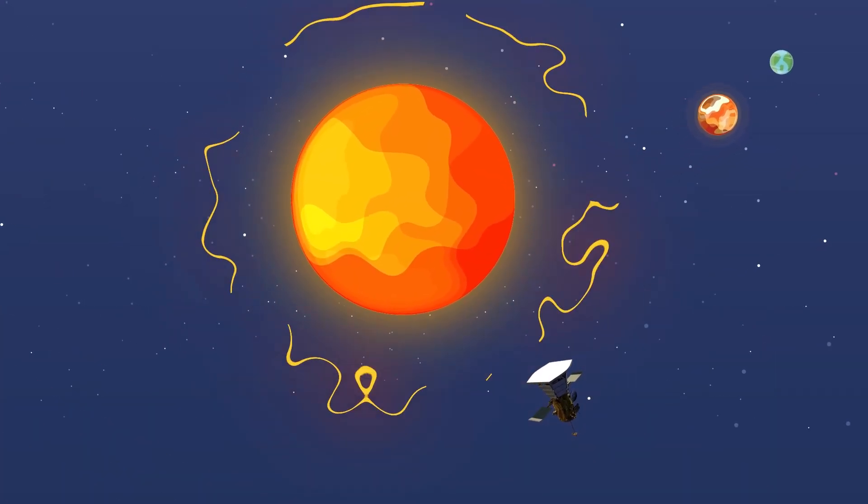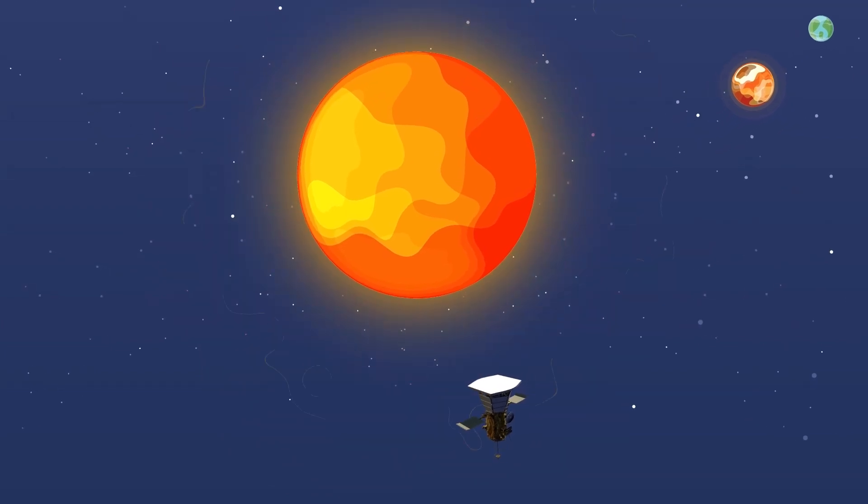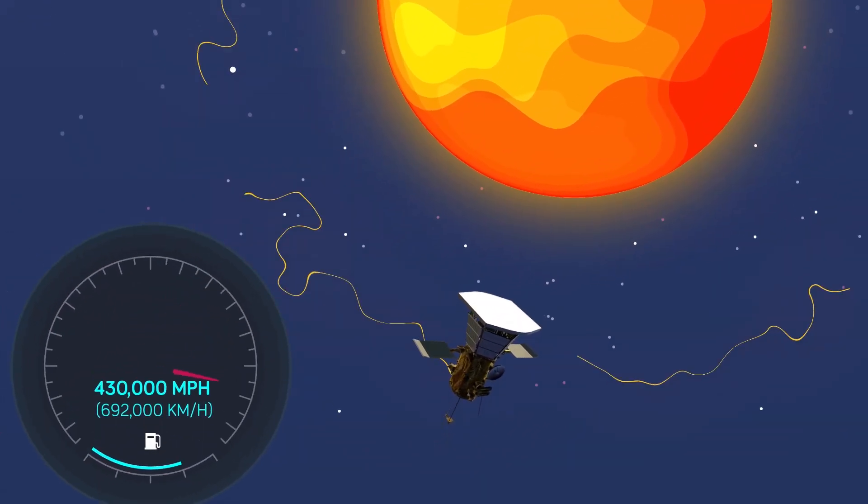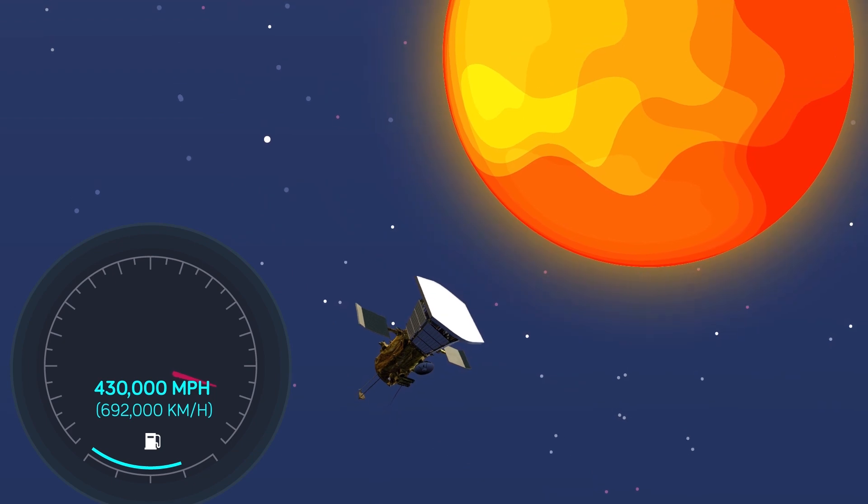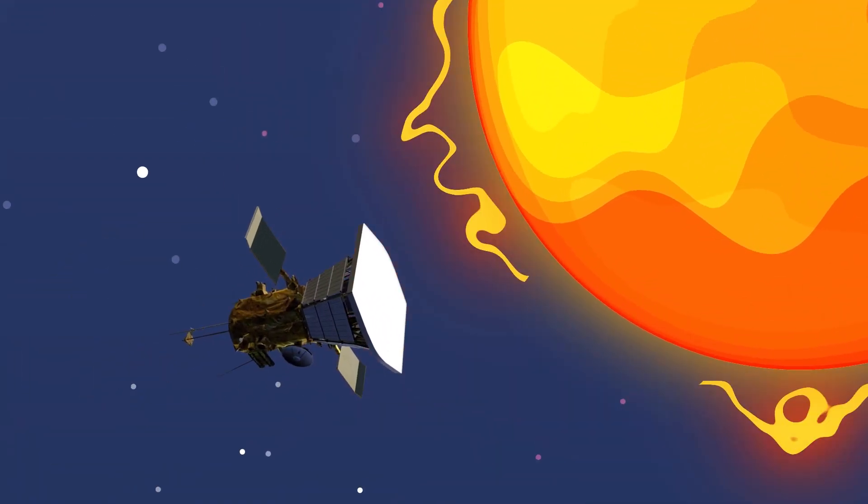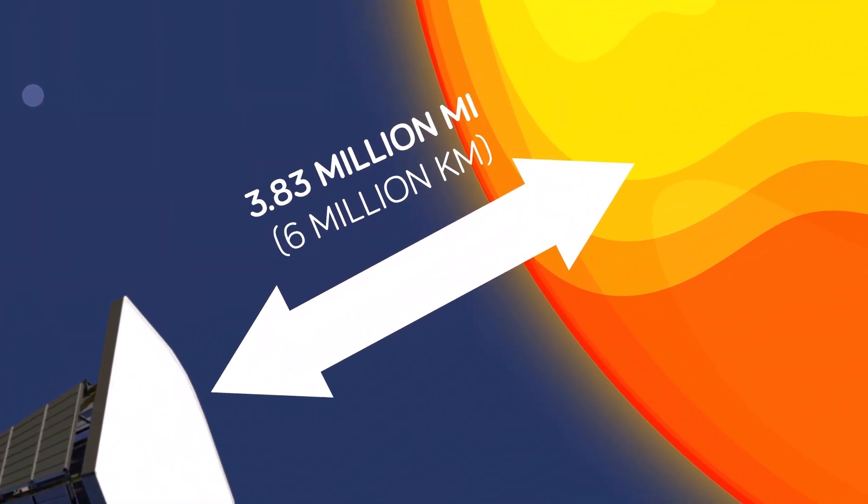The gravity of the sun will also rapidly increase the speed of the probe, which is expected to reach a velocity of 430,000 miles per hour when it arrives at the closest point to the sun in its mission, around 3.83 million miles from the star's surface.